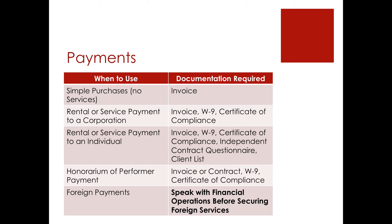If your organization is processing an honorarium for a performer or a speaker, you need to have an invoice or contract — which would be negotiated by your RSO's advisor — a W-9, and a signed certificate of compliance. Lastly, there are foreign payments. Please speak with our financial operations team in the basement of the rental club, room 003, before securing foreign services or entering into foreign contracts. They will have additional documentation that you will need to get filled out.